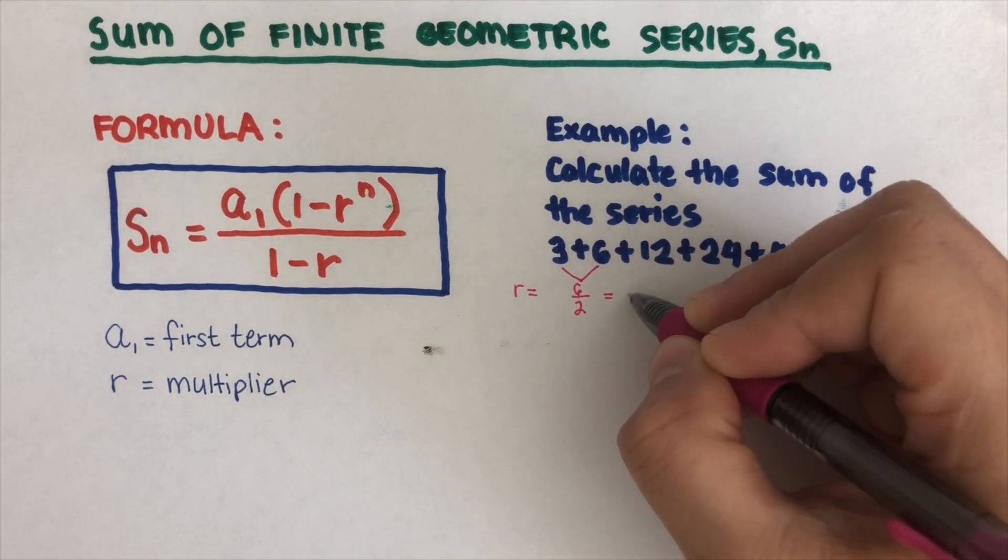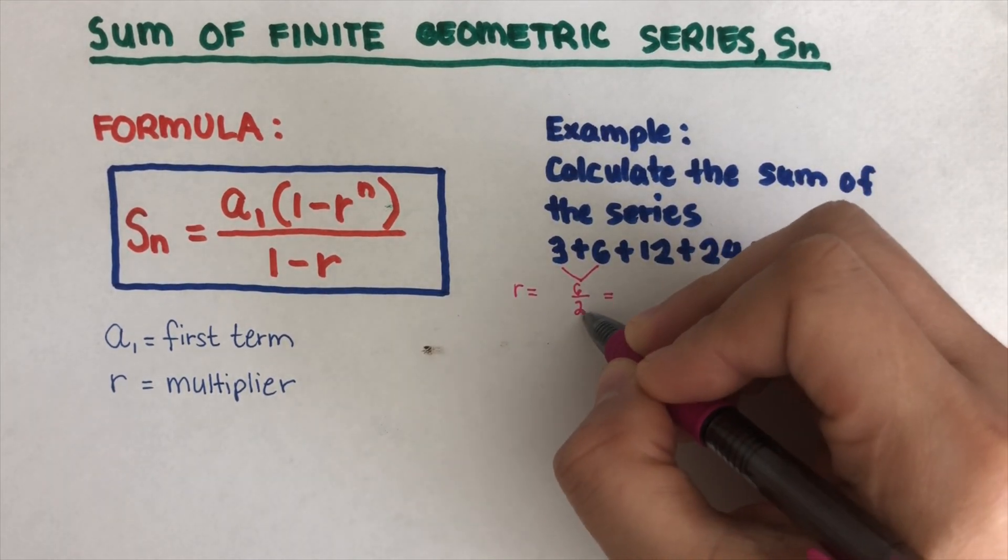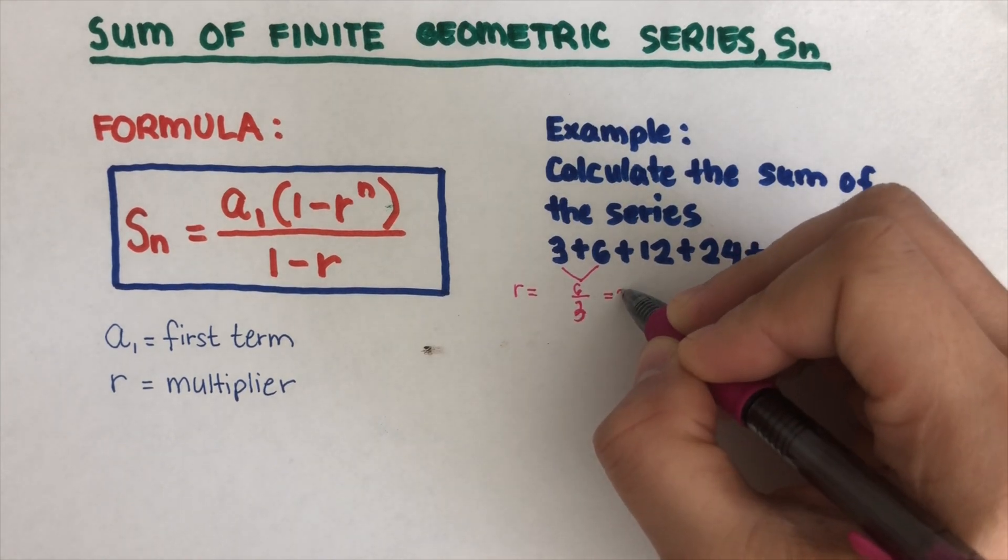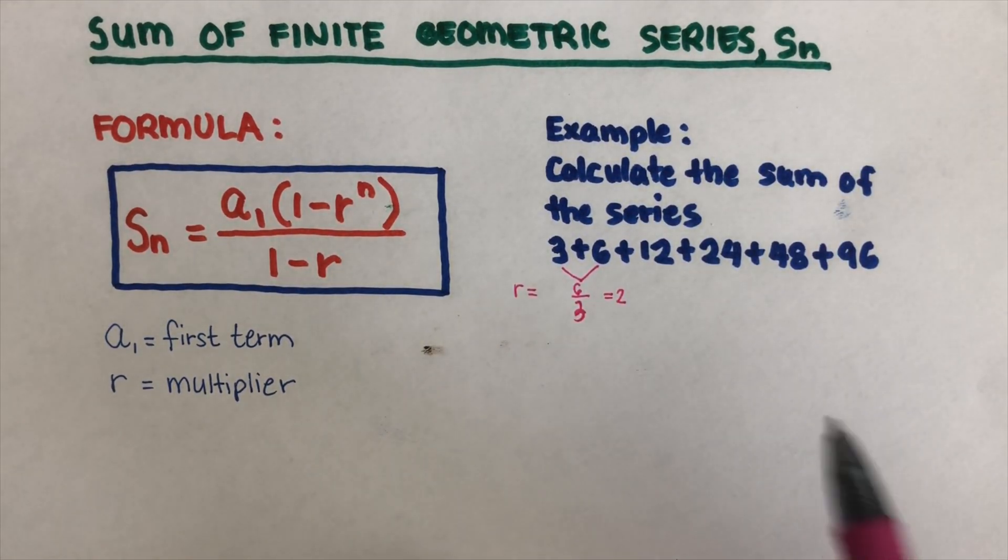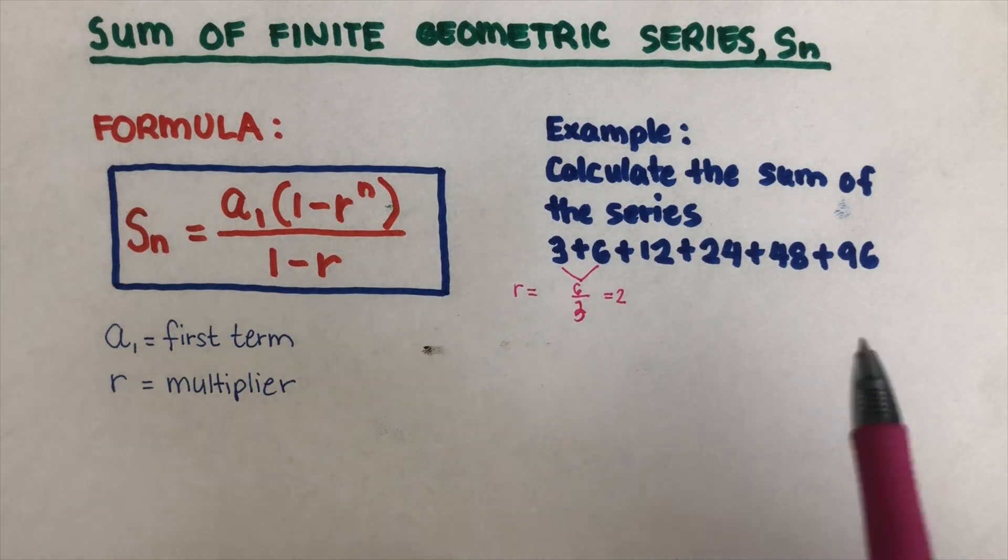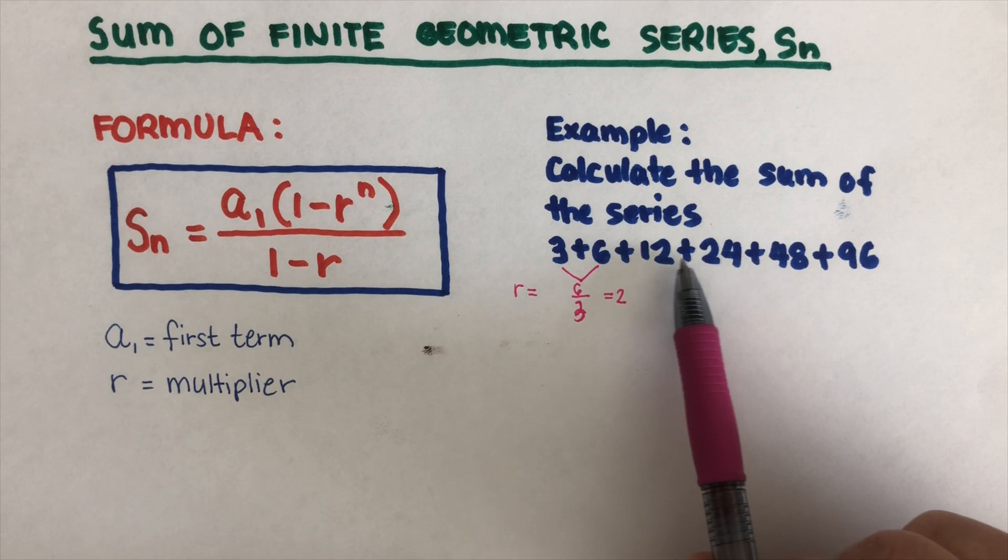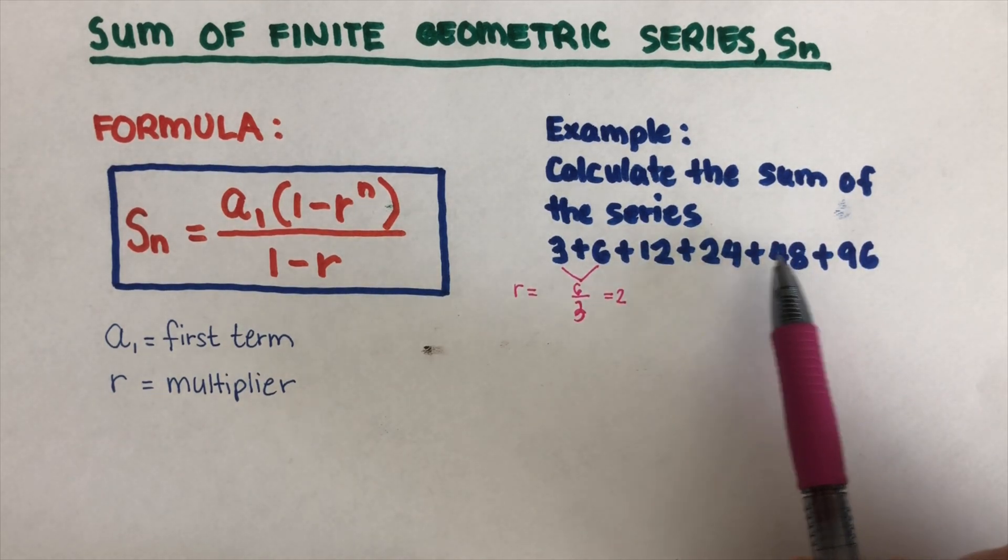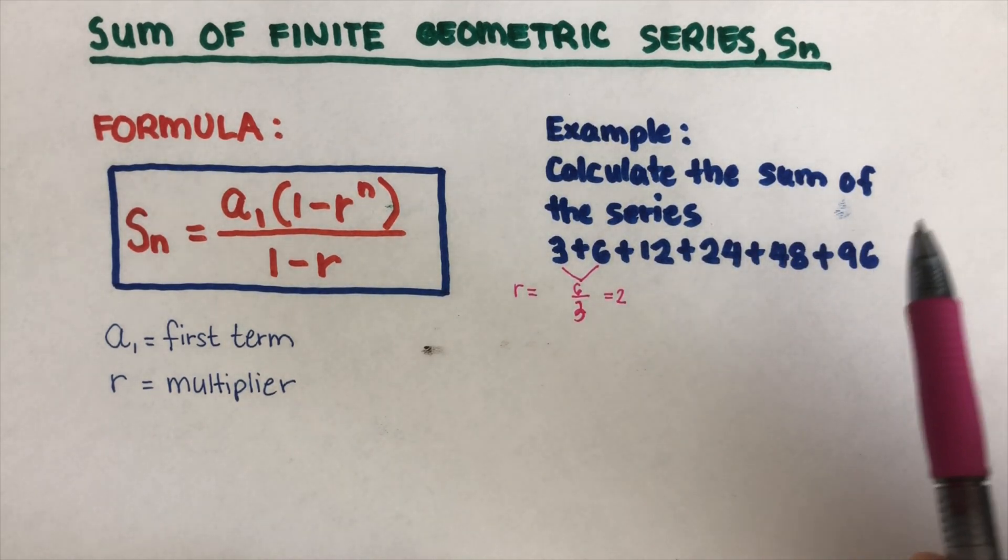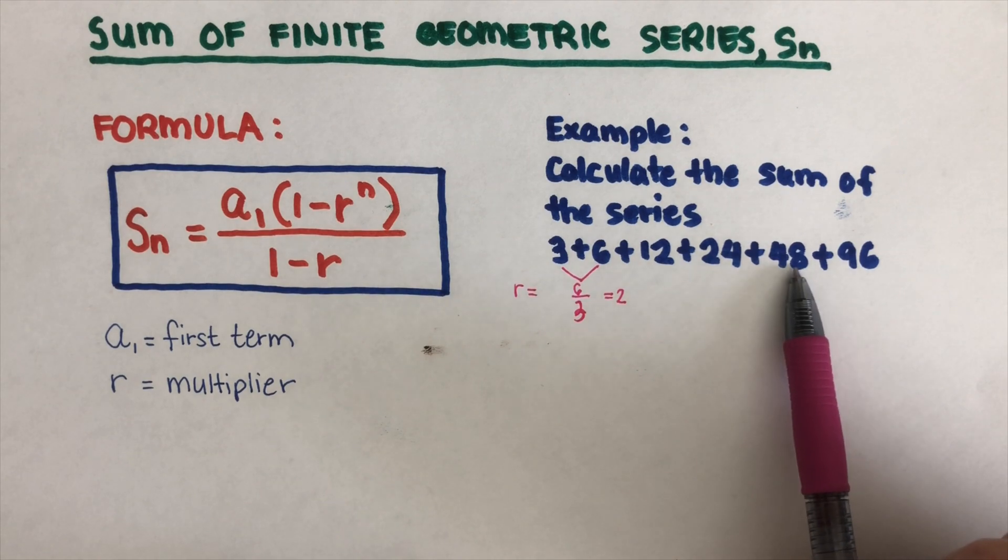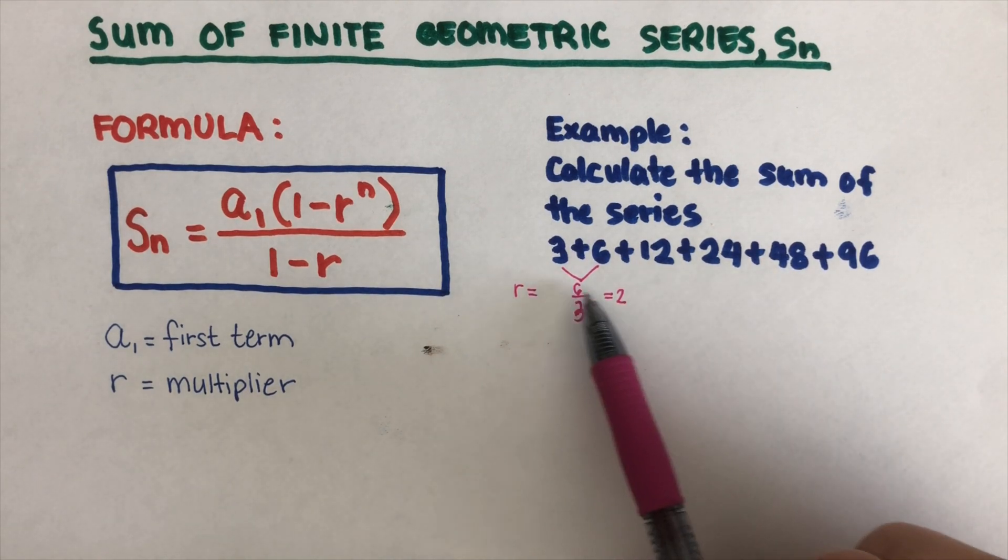Which is equal to, for this case here, 6 divided by 3 is 2. So our r is 2. That's going to be true if we check for all the rest of the terms here. 24 divided by 12 is 2, 48 divided by 24 is 2, 96 divided by 48 is 2. So the multiplier would be 2.